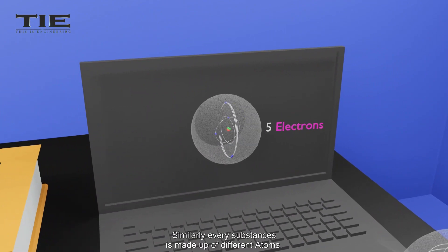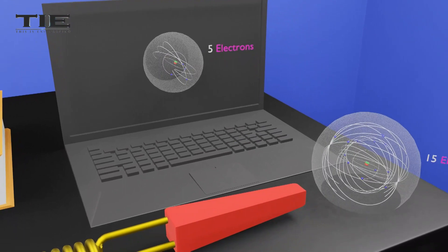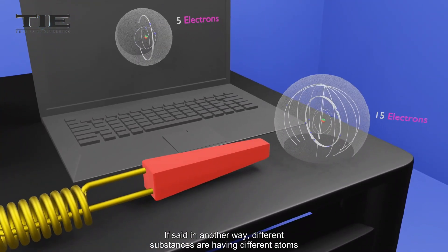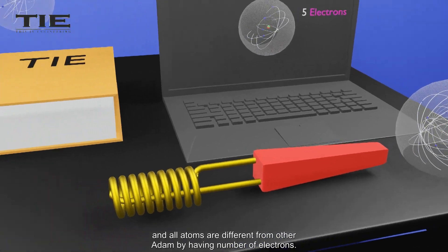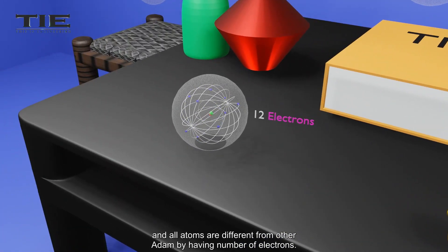Similarly, every substance is made up of different atoms. If said in another way, different substances are having different atoms, and all atoms are differed from other atoms by having a different number of electrons.